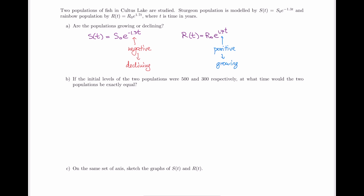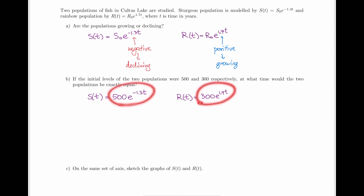Part B gives us information about initial populations, so we can plug them into the corresponding models and refine them. For the sturgeon, originally 500 fish, the model becomes 500e^(−1.3t). For the rainbow trout, 300 fish initially, the model is 300e^(1.7t). The question then asks: at what time will the two populations be exactly equal? To find this, we set the two models equal to each other.